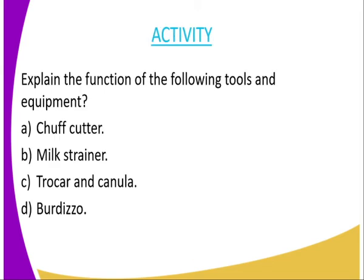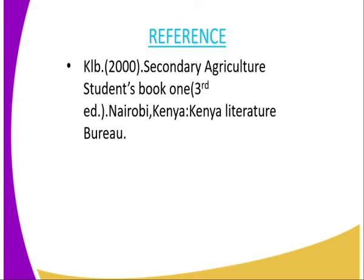The activities of today: you are supposed to explain the functions of the following tools and equipment as already discussed. Number A, the chaff cutter. Number B, the milk strainer. Number C, the trocar and cannula. And finally, the function of the Bedizel. For reference, you can use Secondary Agriculture Student Book One, published by Kenya Literature Bureau.